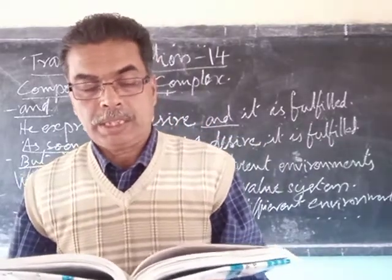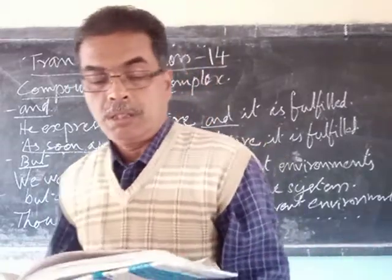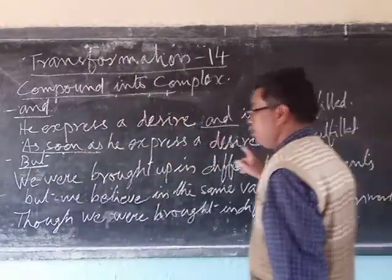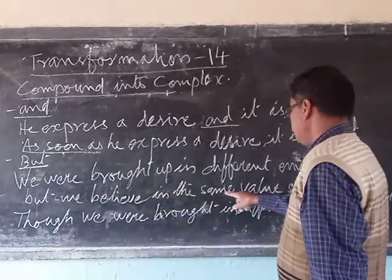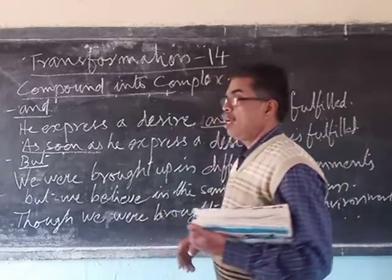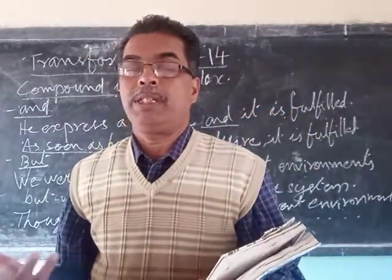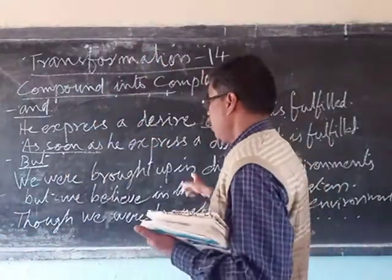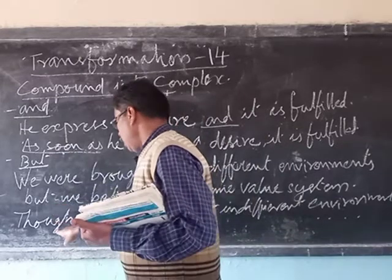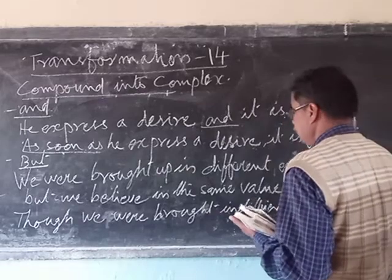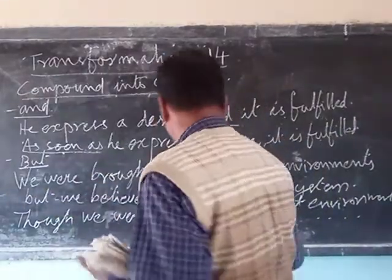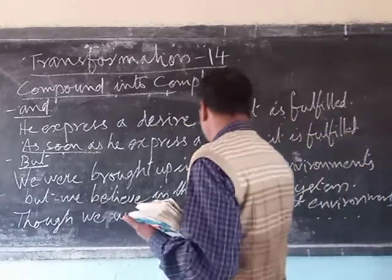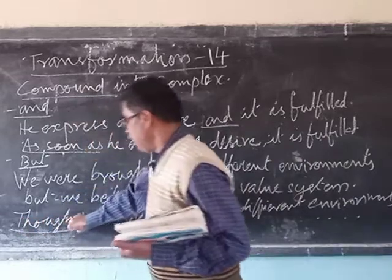Compound sentences containing adversative conjunctions like 'but', 'still', 'however', and so on. Example: 'We were brought up in different environments but we believed in the same value system.' Converting this: 'Though we were brought up in different environments, we believed in the same value system.' 'Though' is the subordinating conjunction used to express contrast.